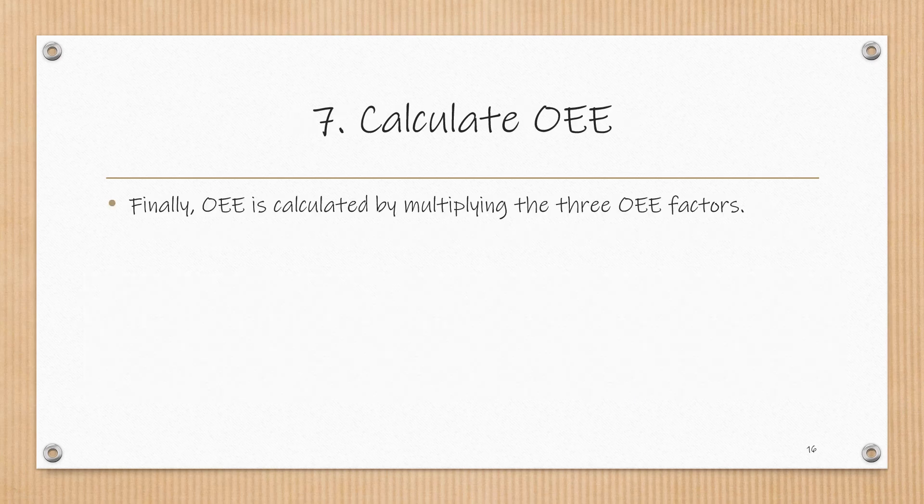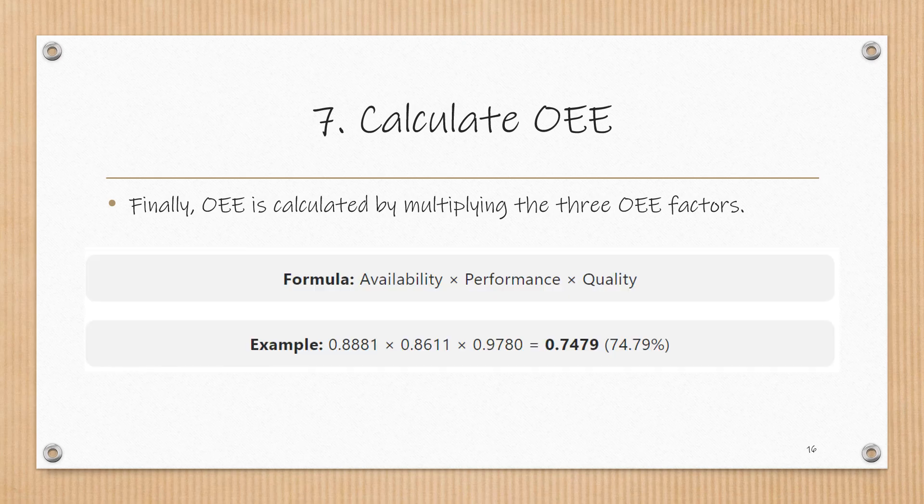Finally, OEE is calculated by multiplying the three OEE factors: availability times performance times quality. In our example, the OEE calculation results in 74.79%. To put this value in perspective, let's examine world-class OEE metrics.